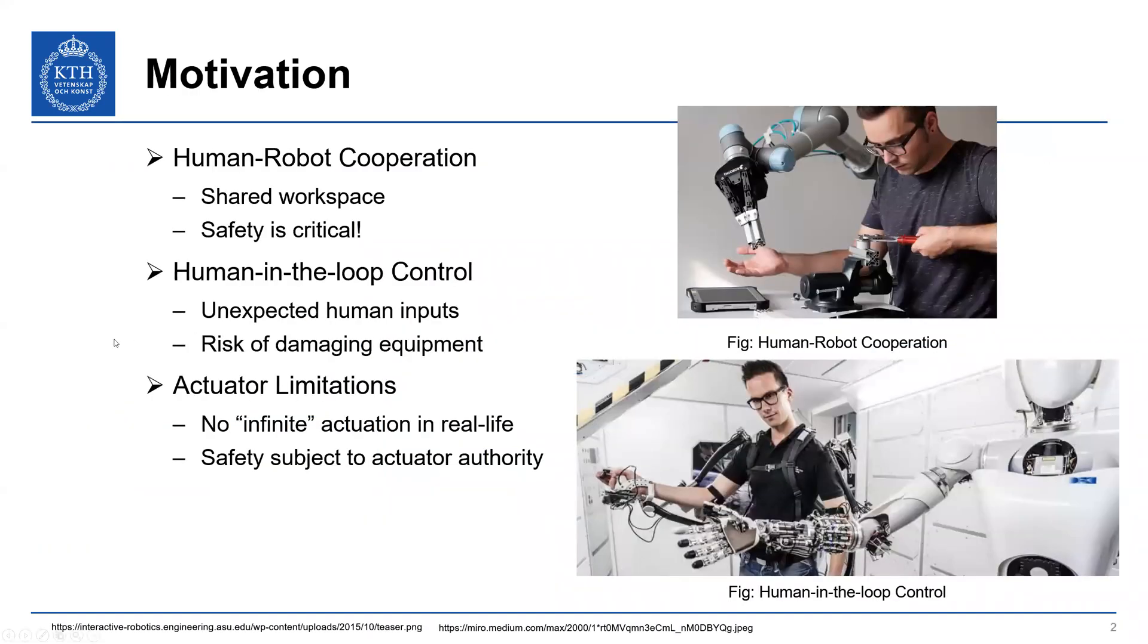So here we're looking at Euler-Lagrange systems and we want to ensure safety. One motivation behind this work is the idea of humans and robots cooperating. A human and a robot are in the same workspace to help accomplish a task and we want to ensure that safety is ensured. We don't want the robot to accidentally harm the human but also you can think of human-robot cooperation in the human-in-the-loop type of situation where the human wants to control the robot and we're not sure what the human input is going to be.